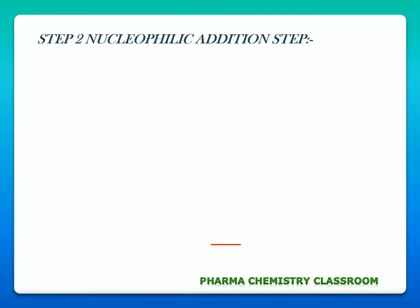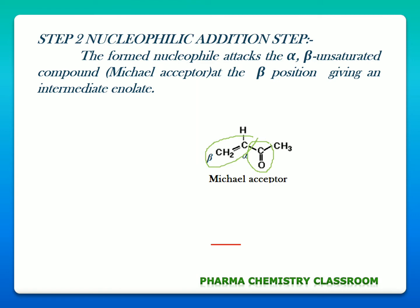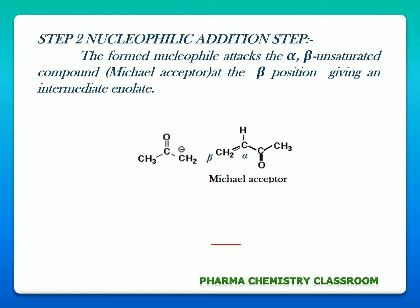Step two is a nucleophilic addition step. In this step the formed nucleophile attacks the alpha-beta unsaturated compound — which is our Michael acceptor — at the beta portion, giving an intermediate enolate. This is our Michael acceptor, which is an alpha-beta unsaturated carbonyl compound. Our formed enolate or nucleophile comes and attacks this Michael acceptor at the beta portion. This is our Michael donor nucleophile formed in the first step coming and attacking this Michael acceptor at the beta portion, giving an intermediate enolate.